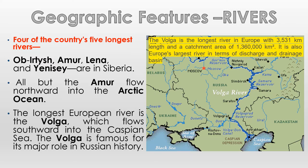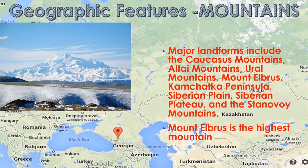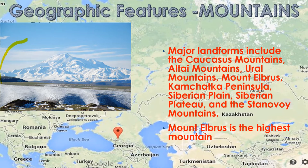Let's move to the next geographic feature of Russia — mountains. Major landforms include the Caucasus Mountains, Altai Mountains, Ural Mountains, Mount Elbrus, Kamchatka Peninsula, Siberian Plains, Siberian Plateau, and the Stanovoy Mountains. Mount Elbrus is the highest mountain in Russia. This is a photo of Mount Elbrus — isn't it beautiful?